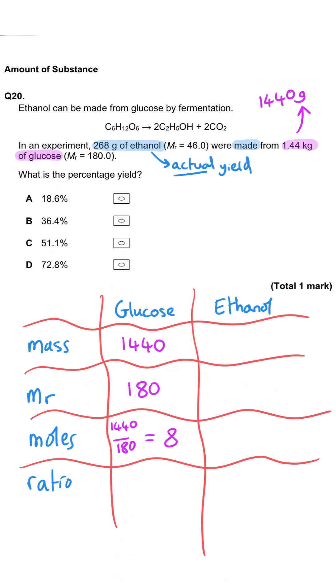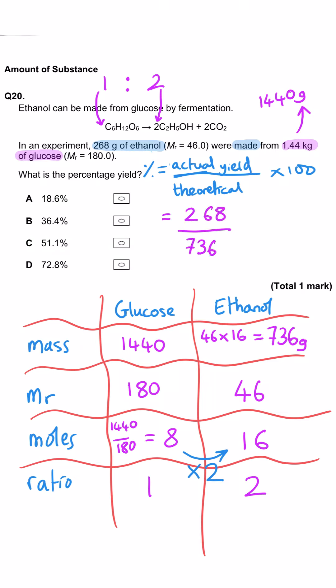The mole ratio from the equation is 1 glucose makes 2 ethanol. So 8 moles of glucose will make 16 moles of ethanol. What mass will this have? Mass equals MR times moles, so 16 times 46 that we've been given is 736 grams. Percentage yield is actual yield divided by theoretical yield multiplied by 100. So 268 divided by 736 multiplied by 100 gives us 36.4%. B is the correct answer.